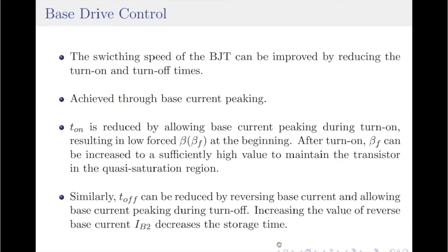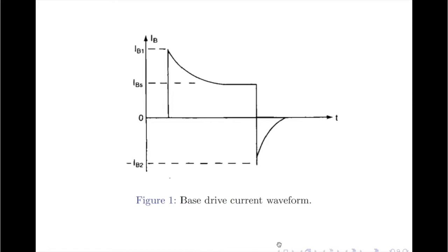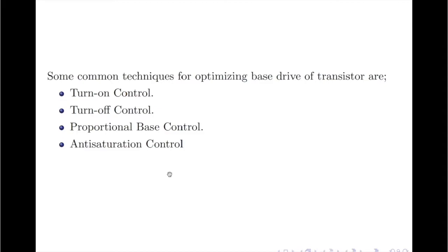A typical arrangement for the base current waveform is as shown in figure 1 here. The base current peaking during the turn-on creates low forced beta at the beginning, causing the base current to peak. Once the transistor turns on, the forced beta can be increased to a sufficiently high value to maintain the transistor in the quasi-saturation region. Some of the commonly used techniques for optimizing the base drive of a transistor are turn-on control, turn-off control, proportional base control, and anti-saturation control.